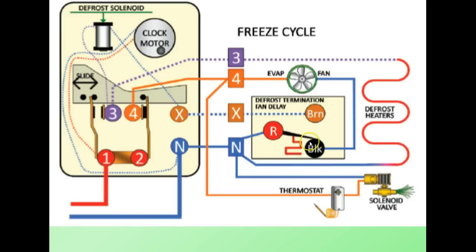115 volts into the evap fan motor. We do have a complete circuit through the defrost termination and fan delay. The fan is operating. We have 115 volts at the thermostat, passes through the thermostat, solenoid valve is activated, compressor is on, and we are now in the freeze cycle.